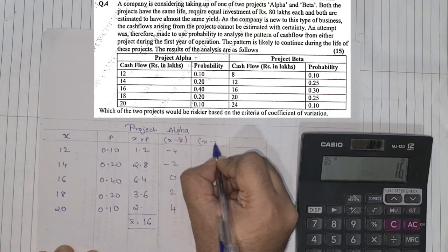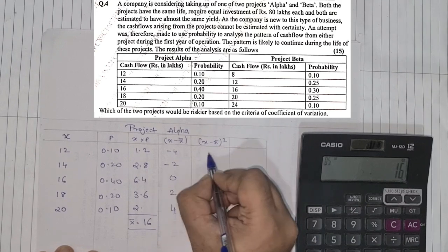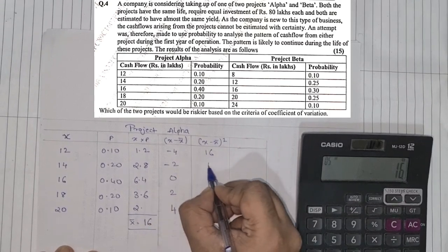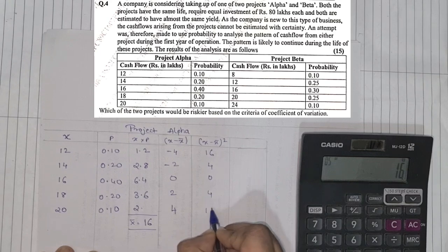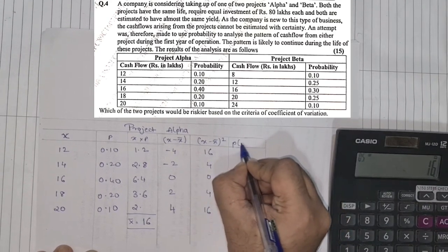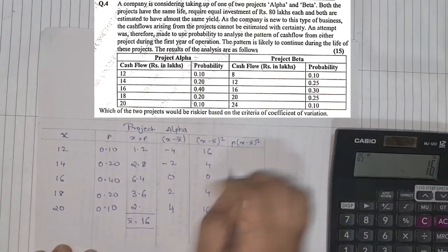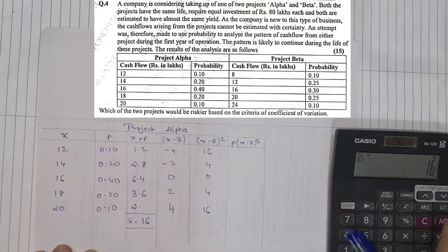Next, X minus X bar the whole square. 4 times 4 is 16, 2 times 2 is 4, 0, 4, and 16. And last, probability into X minus X bar the whole square. So we have to multiply probability with this column.